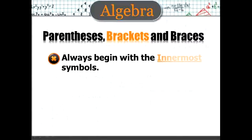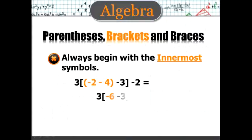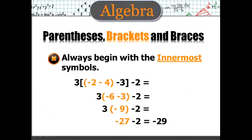Using parentheses, brackets and braces, always begin with the innermost symbols. So when we look at this situation here, let's start with negative 2 minus 4, which will be negative 6. And then negative 6 minus 3 will be negative 9. And then 3 times negative 9 is negative 27. And negative 27 minus 2 is negative 29. Pretty cool, huh?